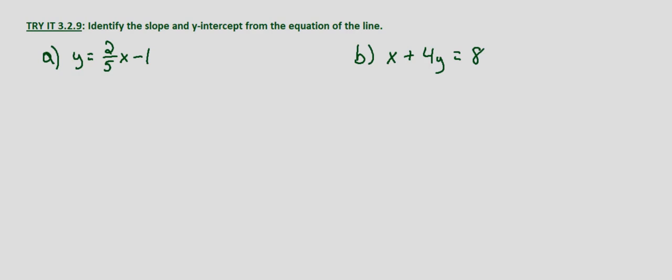So the key is we first need slope-intercept form which is y equals mx plus b where m equals slope and b equals the y-intercept.